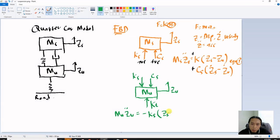Ks times with displacement zs minus with zu. Okay, downward again minus Cs times with the velocity zs minus with velocity zu.